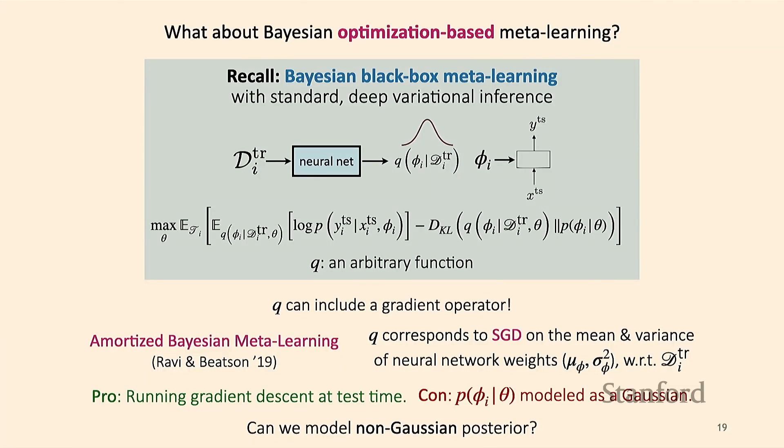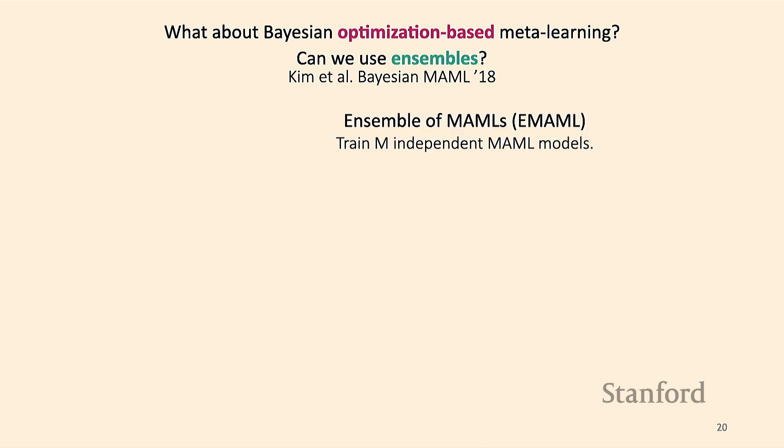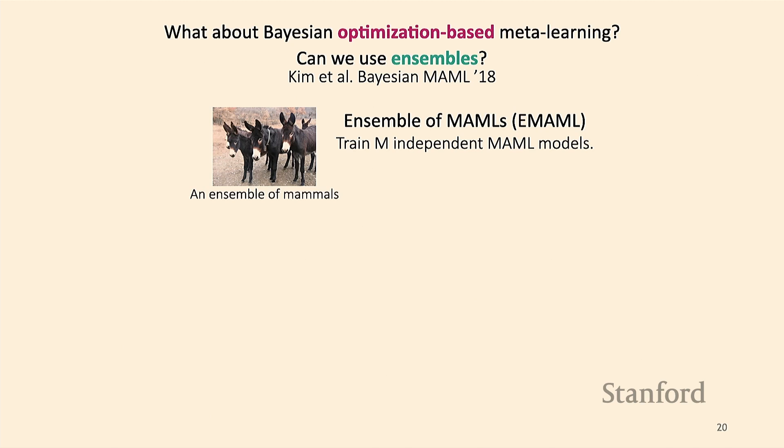Now the question of whether we can model a non-Gaussian posterior — we'll look at two different approaches. The first is ensembles. If we want a distribution over phi_i, we can train an ensemble of M independent MAML models, trained independently with different mini-batches of tasks. This also works with black box or non-parametric methods and gives you a distribution over meta-parameters — when you run gradient descent from those initializations, you get a distribution over phi_i.